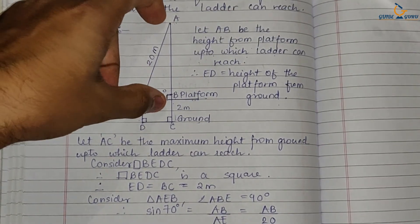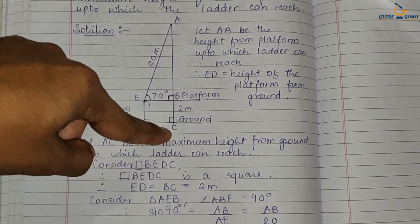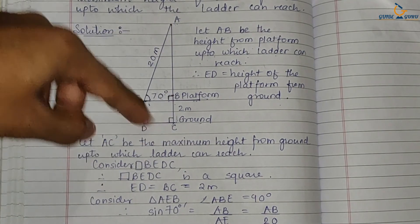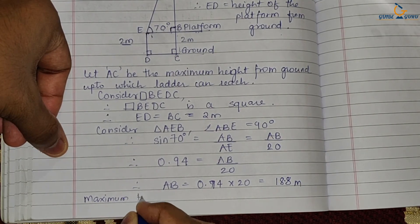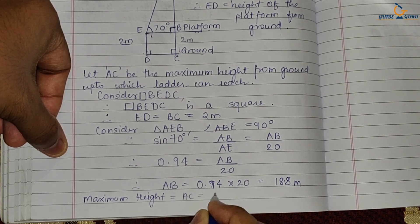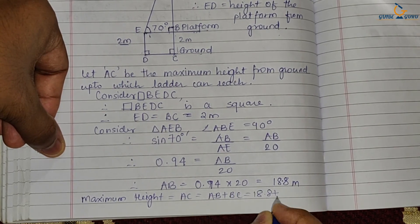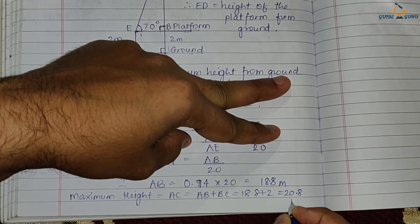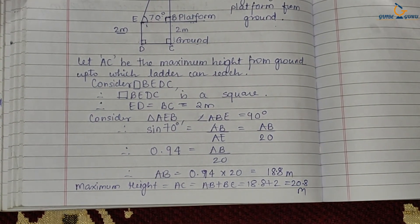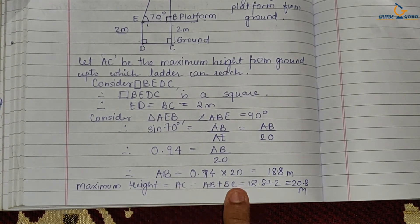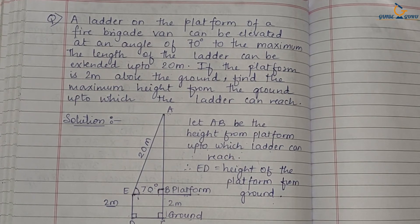The total maximum height AC = AB + BC = 18.8 + 2 = 20.8 meters. So the maximum height from the ground up to which the ladder can reach is 20.8 meters. Once you draw the diagram the question becomes quite simple, and you need to understand which trigonometric ratio to use.